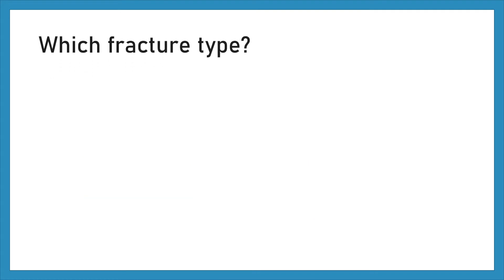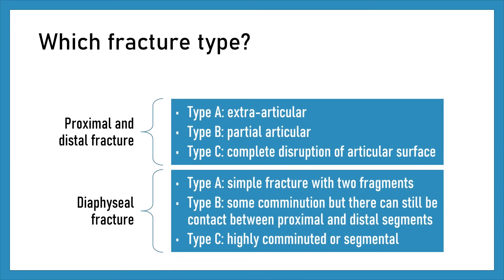"Which fracture type" — divided into two categories: proximal and distal fractures, which consist of Type A (extra-articular), Type B (partial articular), and Type C (complete disruption of articular surface); and diaphyseal fractures, which consist of Type A (simple fracture with two fragments), Type B (some comminution but contact between proximal and distal segments), and Type C (highly comminuted or segmental).